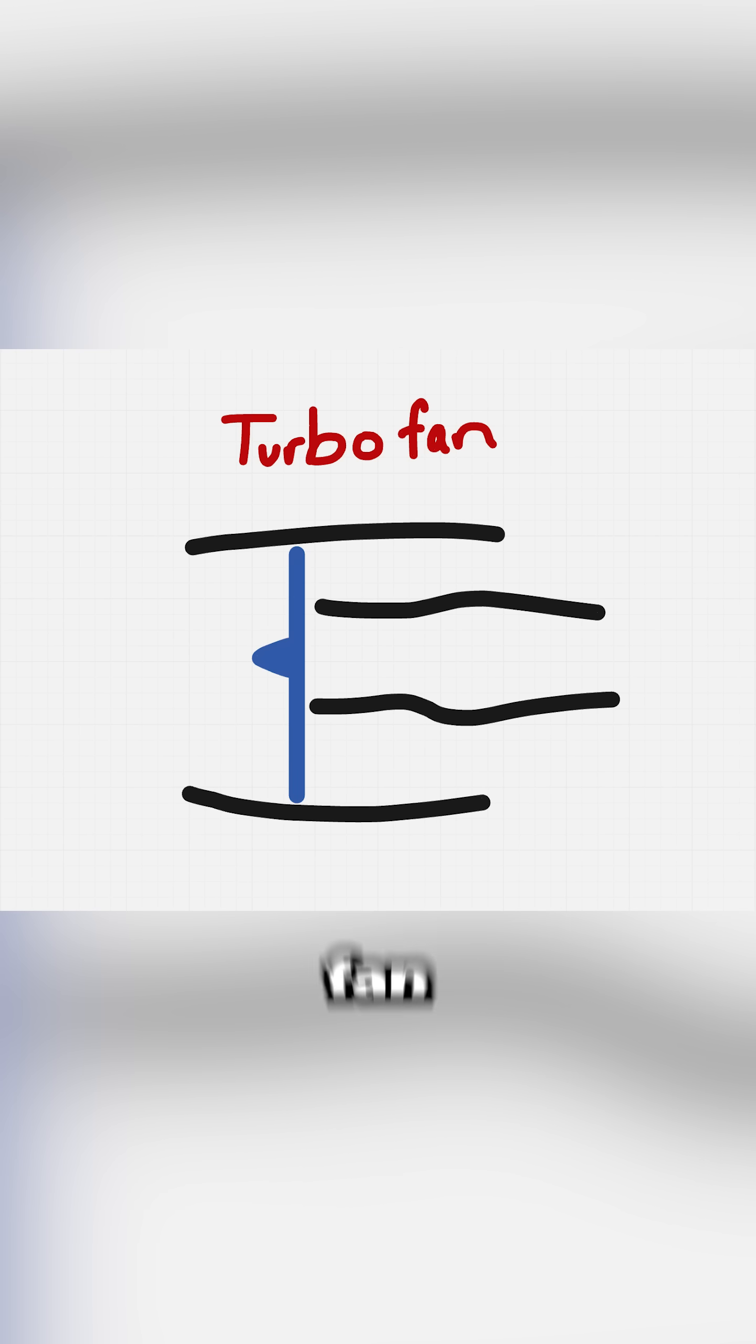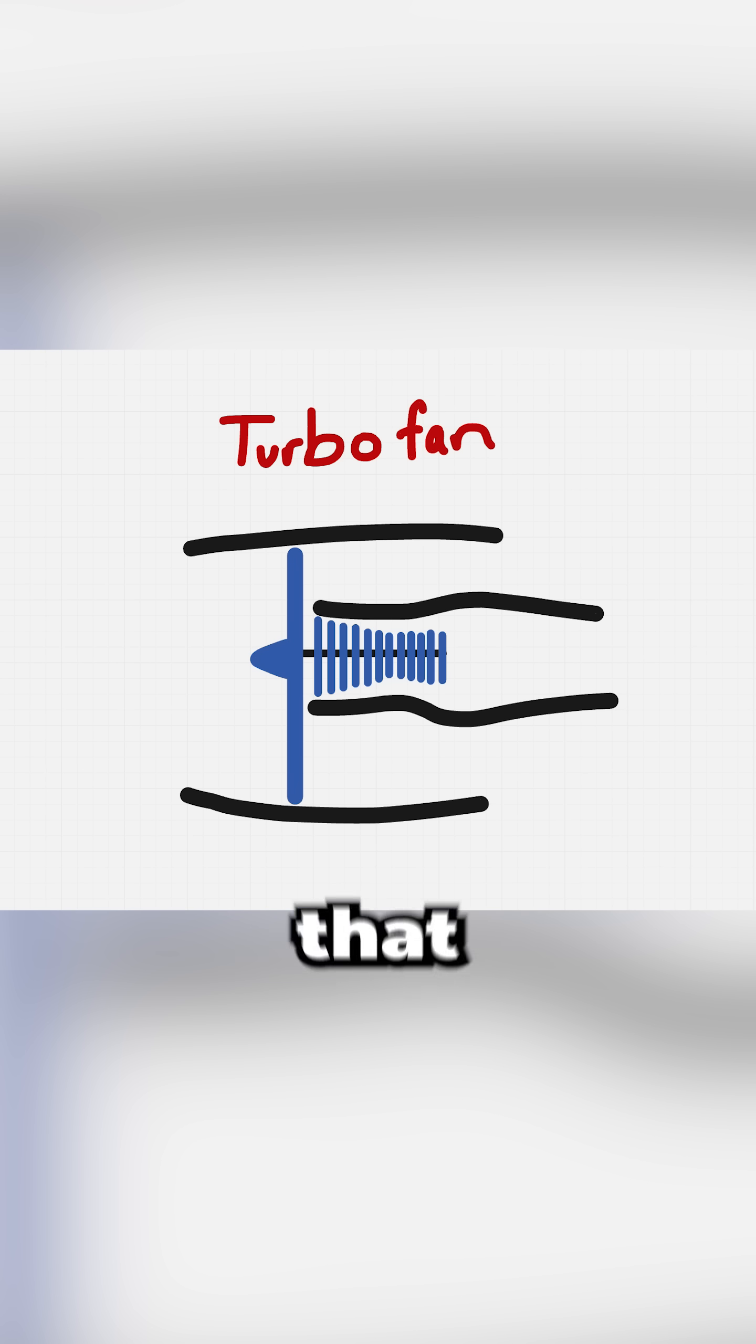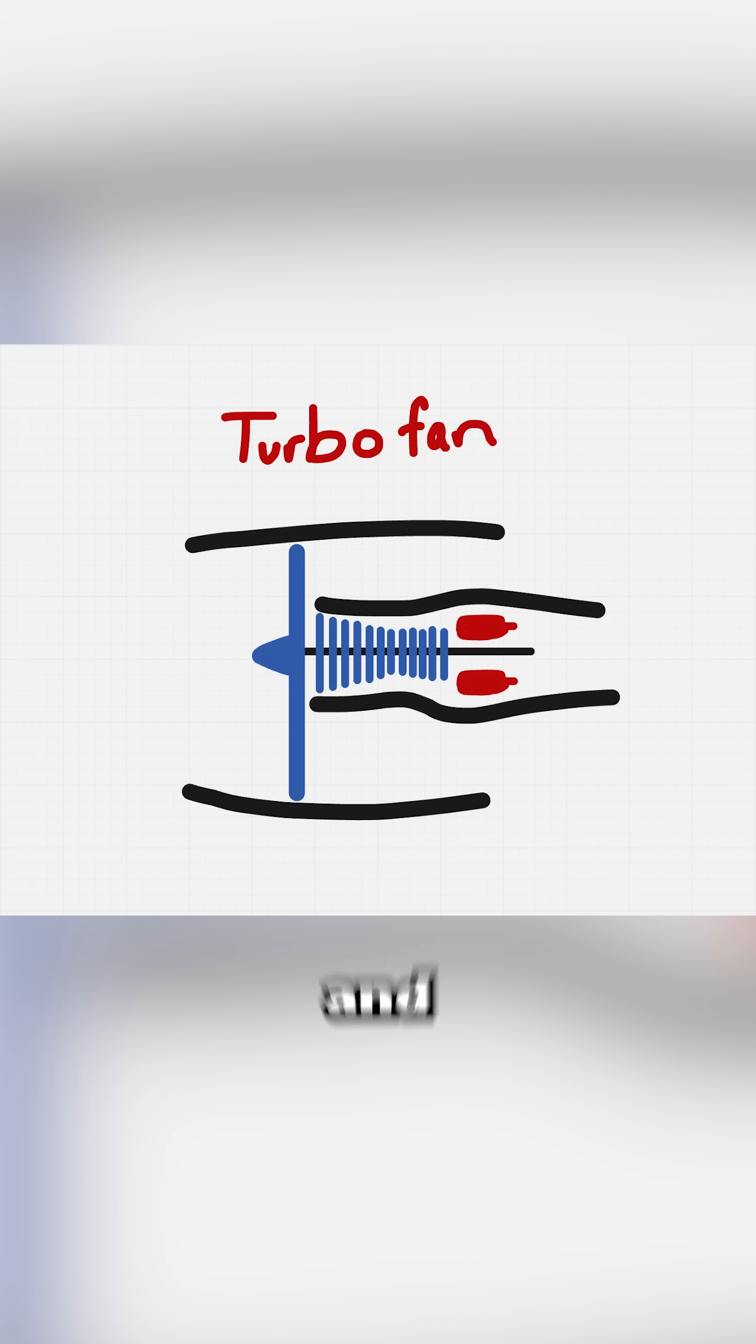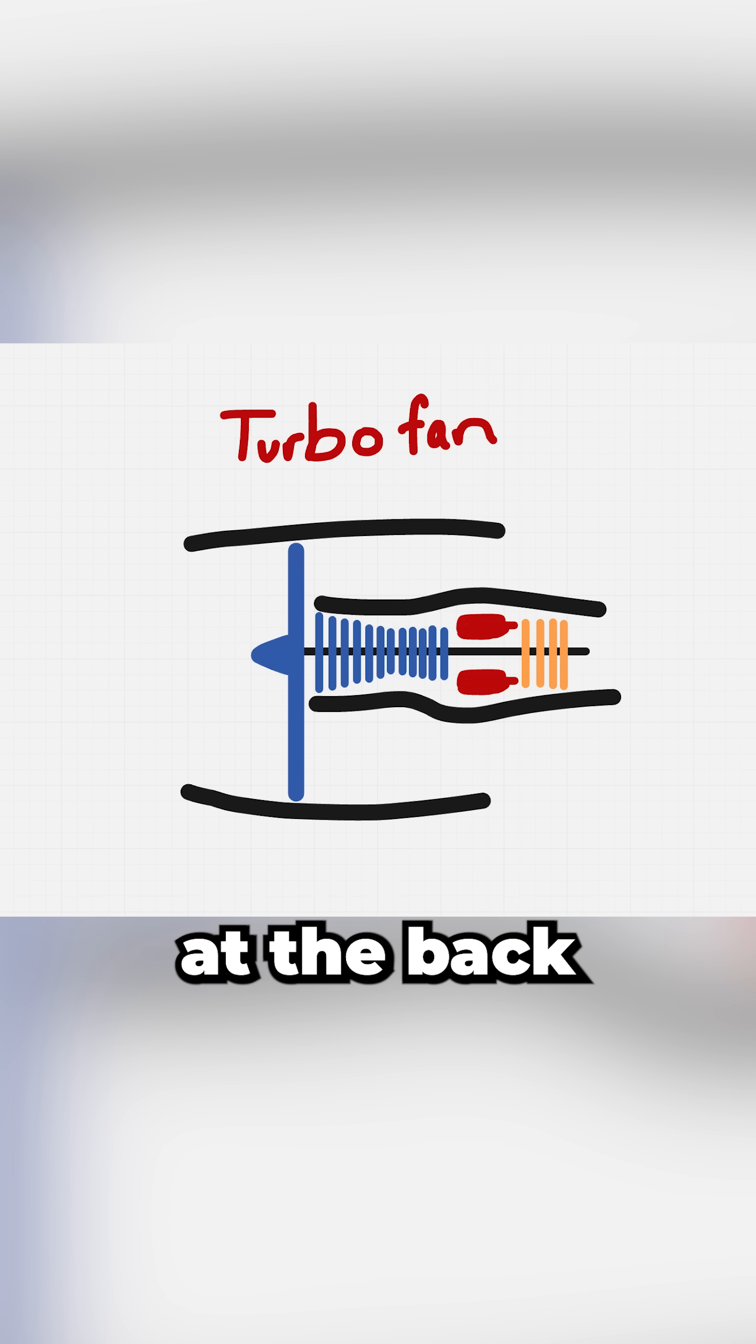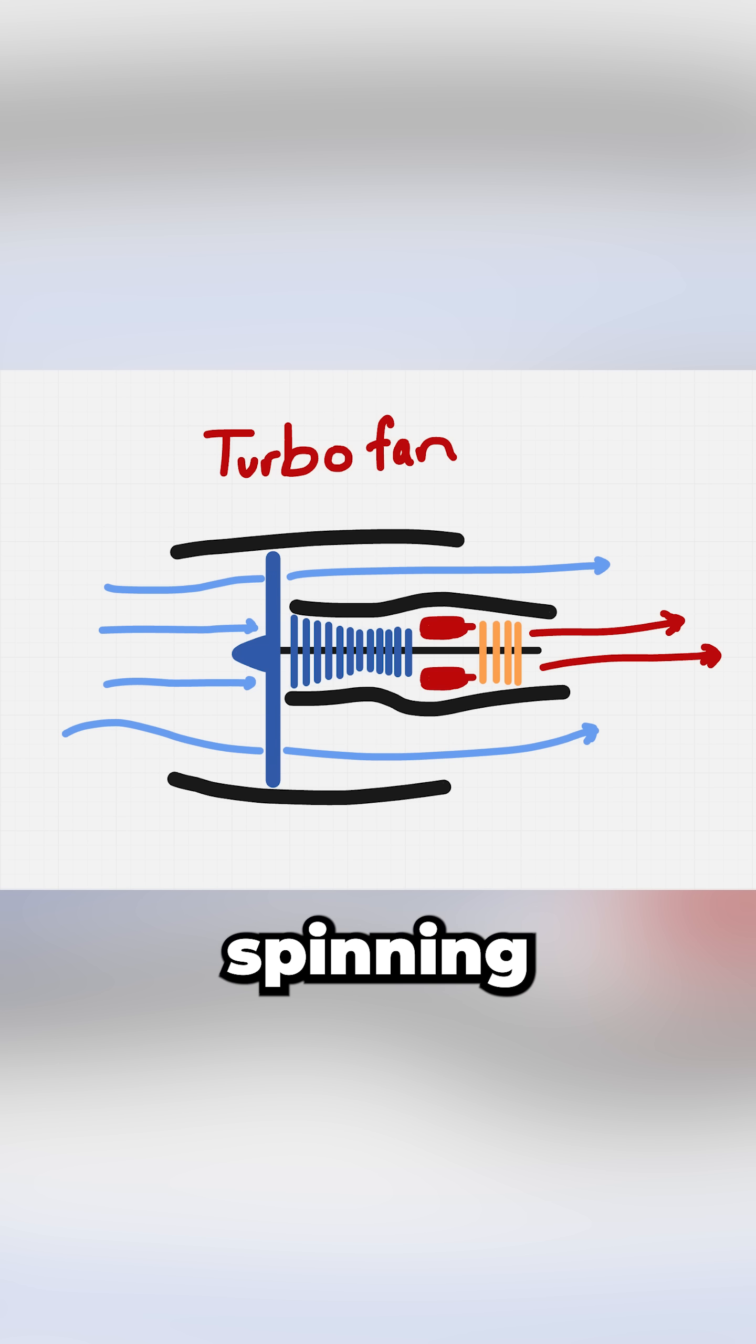A turbofan has a large fan at the front, multiple compressor sections that progressively compress the incoming air, a combustion chamber, and multiple turbine sections at the back that extract energy to keep everything spinning.